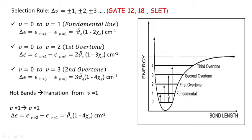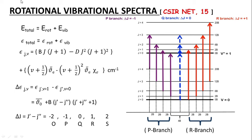From the picture: the transition V = 0 to V = 1 is the fundamental line, V = 0 to V = 2 is the first overtone, and V = 0 to V = 3 is the second overtone. Then we have rotational-vibrational spectra, where both rotational and vibrational motions are involved. The total energy is E_total = E_rot + E_vib, and ε_total = ε_rot + ε_vib.